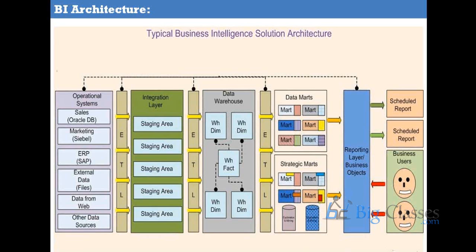In the case of the top-down approach, the idea is to build the data warehouse first and then split the data into different data marts as per the requirement of different divisions or departments.